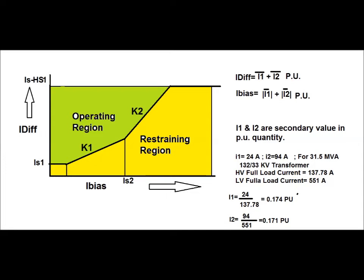For the red phase, I1 equals 24 amperes (HV side primary current) and I2 equals 94 amperes (LV side primary current). The transformer rating is 31.5 MVA. For the 132 kV HV side, full load current is 137.78 amperes, and the LV side full load current is 551 amperes. Therefore, I1 in per unit equals 24 divided by 137.78, which comes to 0.174 per unit. I2 in per unit equals 94 divided by 551, which comes to 0.171 per unit.